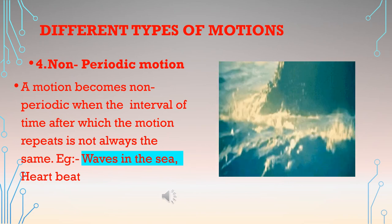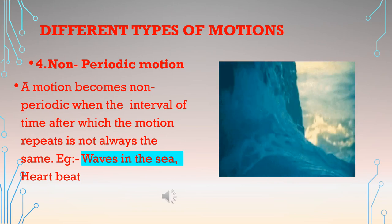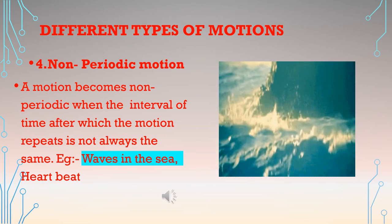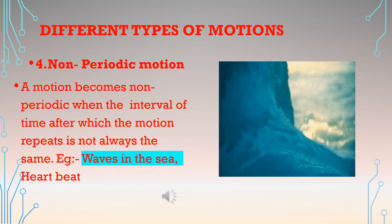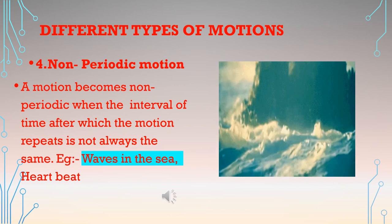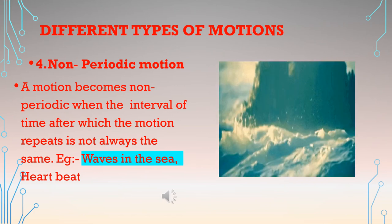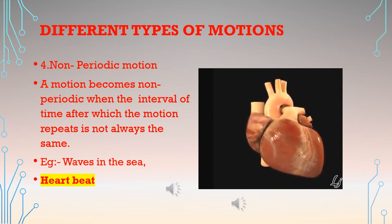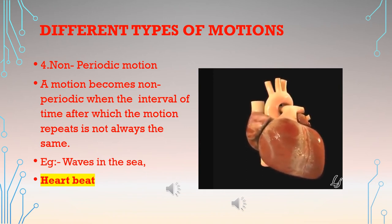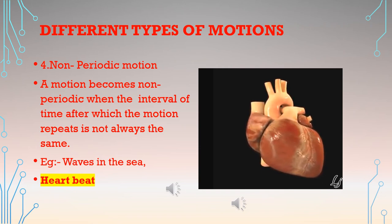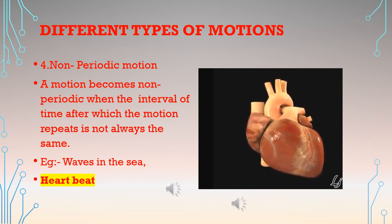There is also non-periodic motion. A motion becomes non-periodic when the time interval in which it repeats is not always the same. For example, waves in the sea — there is no particular time interval between two consecutive waves; any wave can come at any time. Our heartbeat is also non-periodic: when our body needs more energy the heartbeat becomes faster, and when we rest it becomes slower, so it does not repeat at regular intervals.